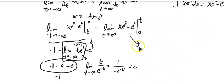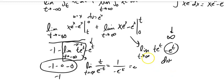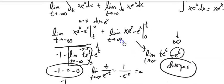Second part, t e to the t. Well, look at this. E to the t, that goes to infinity. This goes to infinity. This diverges right here. So this whole thing diverges. I can't get a value for it. It's a lot of work.